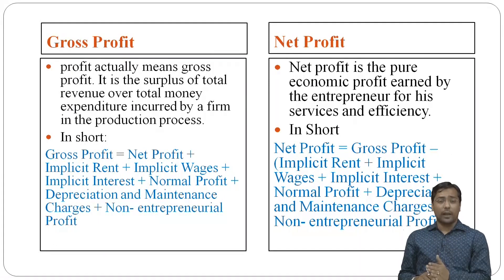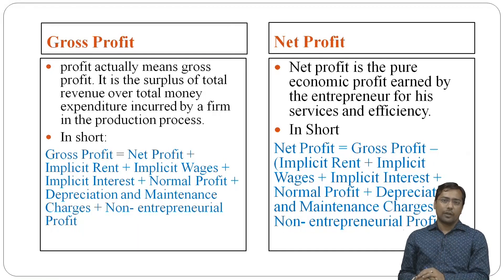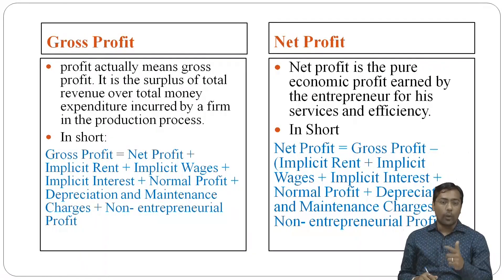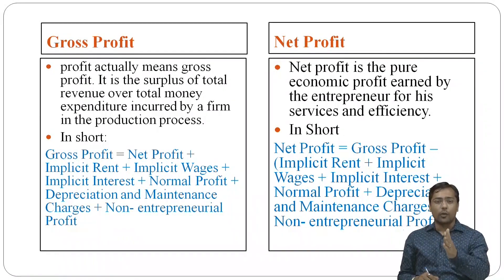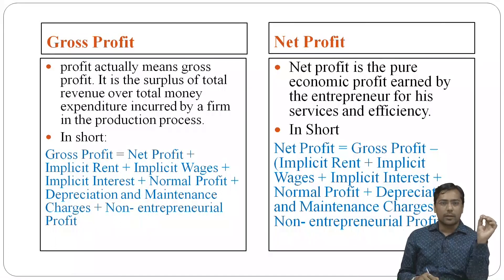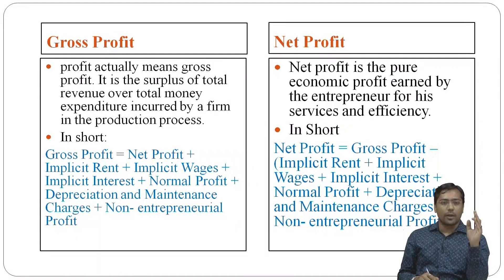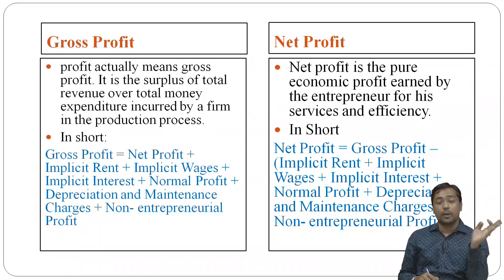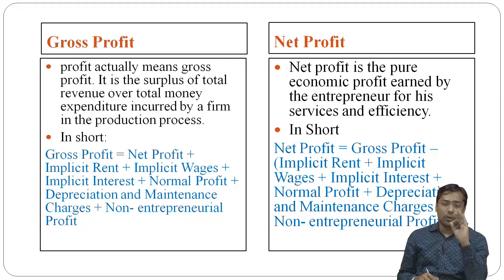Profit is of two types: gross profit and net profit. Gross profit equals net profit plus implicit rent, plus implicit wages, plus implicit interest, plus normal profit, plus depreciation, plus non-entrepreneurial profit. So gross profit is the total overall amount.